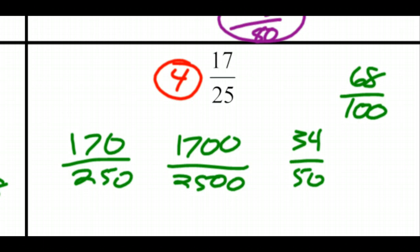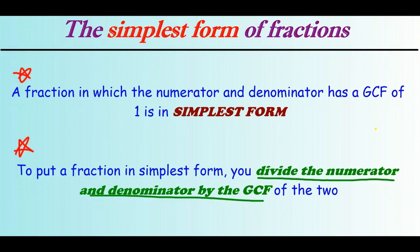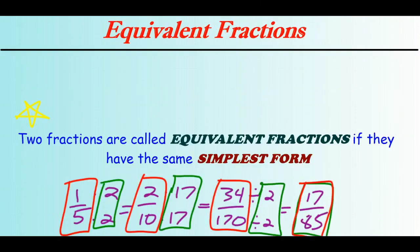As a brief review: fractions have a simplest form, which is what you get when the numerator and denominator have a GCF of 1. You can put any fraction in simplest form by dividing numerator and denominator by the GCF of the two. And two or more fractions that have the same simplest form are called equivalent fractions.